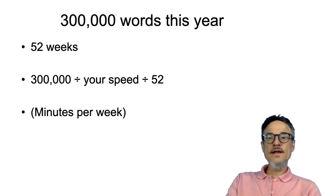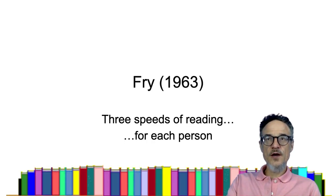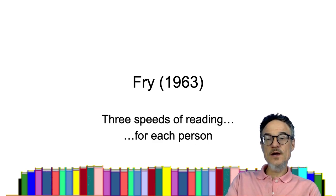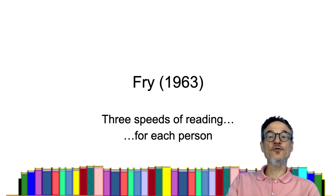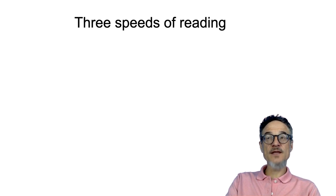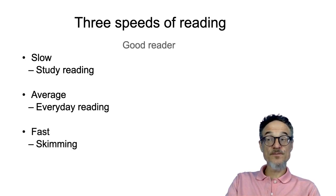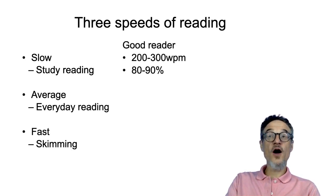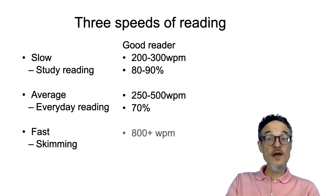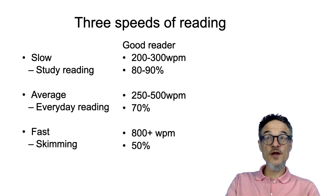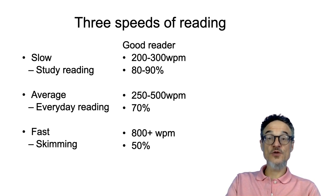Another way to look at reading speed is from research by someone called Fry. This is quite old research from the 1960s. He suggested that there are three different reading speeds for everybody: slow — also known as study reading; average, everyday reading; and fast, which is skimming. Slow reading for a good reader is 200 to 300 words per minute, and a good reader can understand about 80 or 90% of the meaning at that speed.